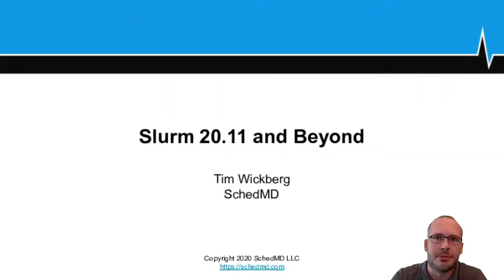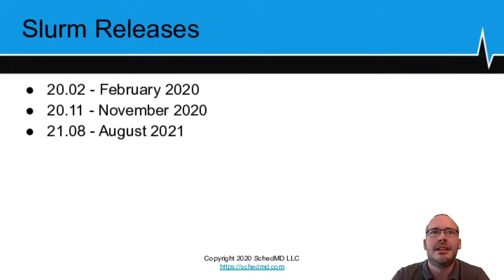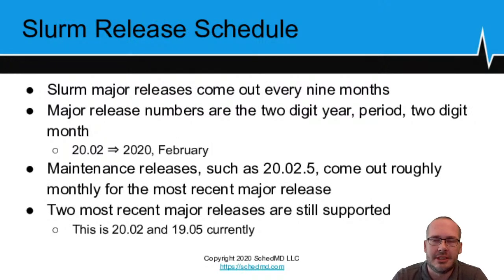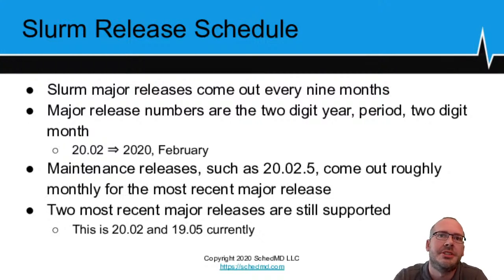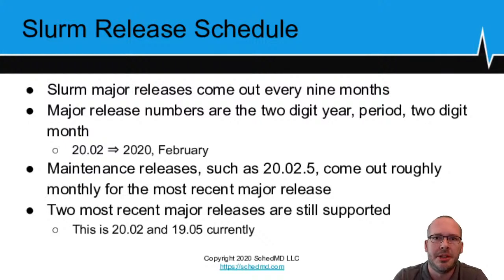My presentation today is Slurm 20.11 and beyond — the standard SchedMD roadmap. Slurm 20.02 came out in February; 20.11 is coming out this November; and then 21.08 in August 2021. Major releases come out every nine months. The release numbers are the two-digit year, a period, and the two-digit month. There is no 'Slurm 20' release — there are actually two different releases in 2020. Maintenance releases, such as the recently released 20.02.5, come out about monthly. SchedMD supports the two most recent major releases: currently 20.02 and 19.05.